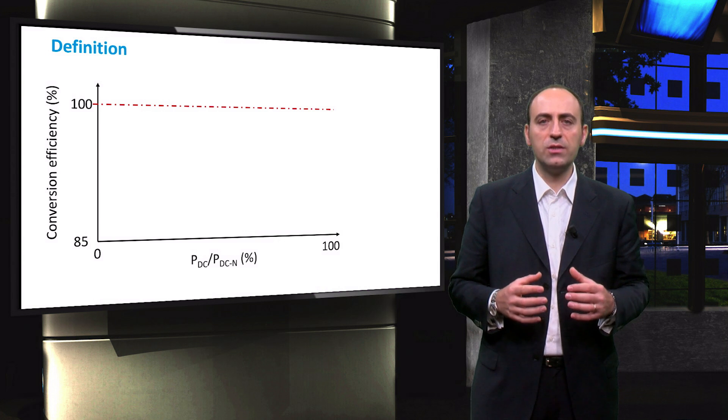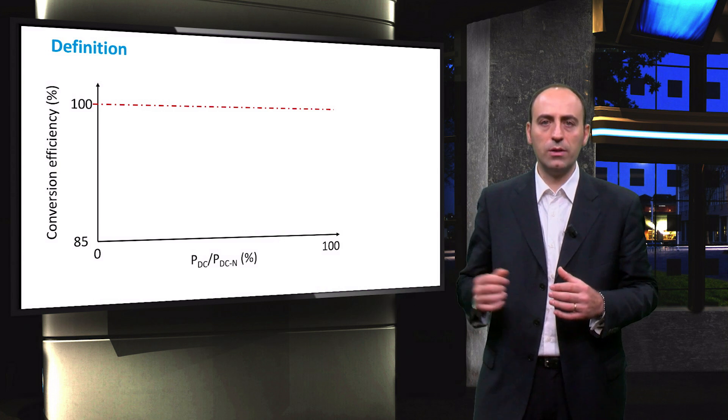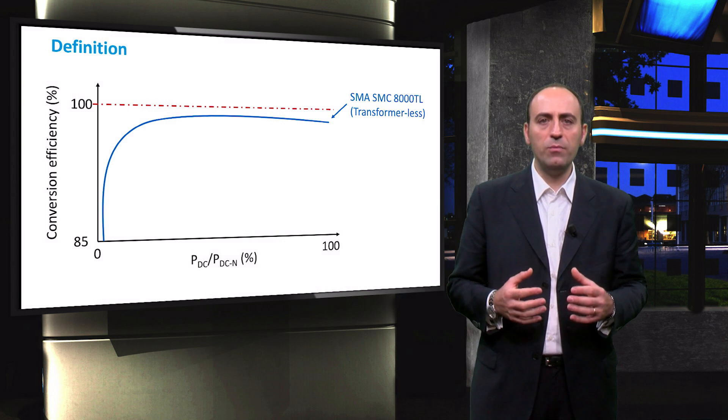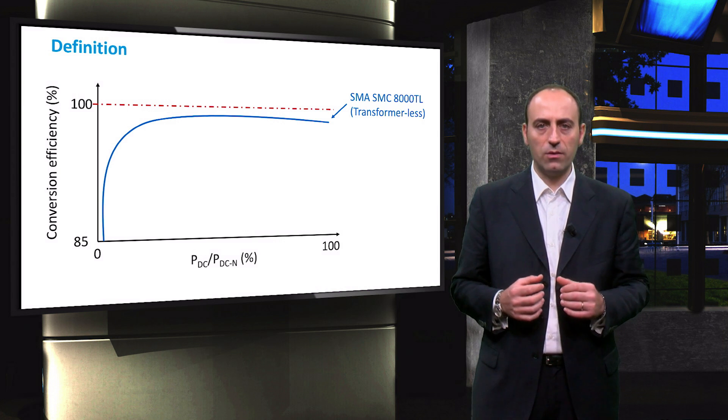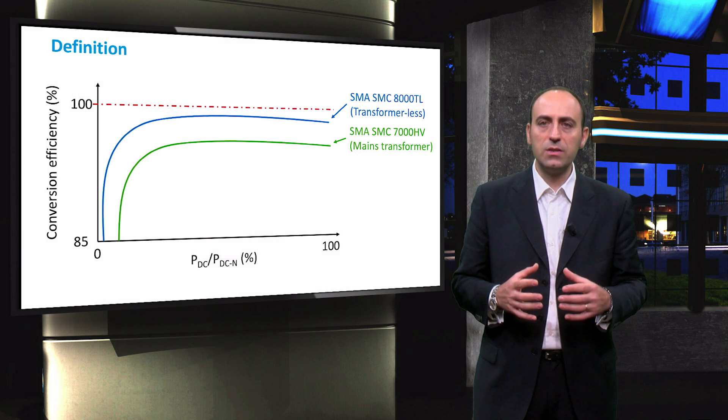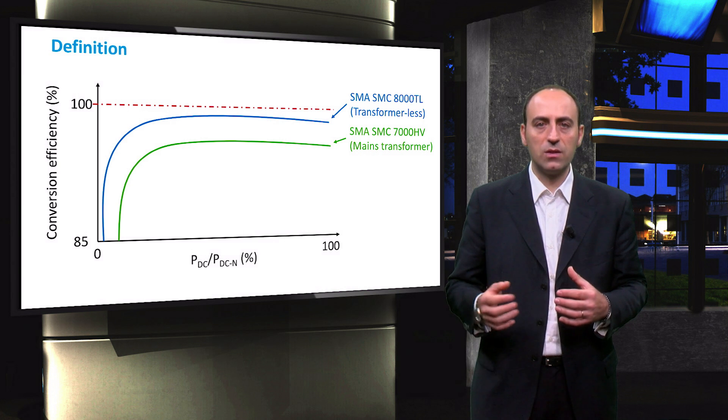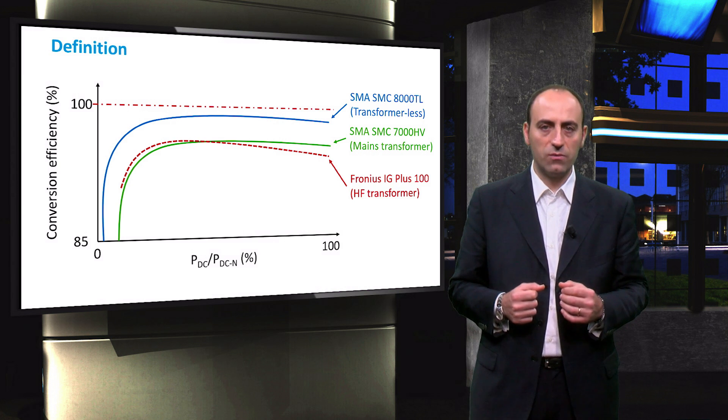Given that the efficiency cannot be 100% for the inverter, a typical shape of the efficiency graph is the one shown in the slide here. In this case, the behavior is referred to a transformer-less type of inverter. Different efficiencies can be found for different types and models of inverters, such as ones with mains transformer and high-frequency transformer.